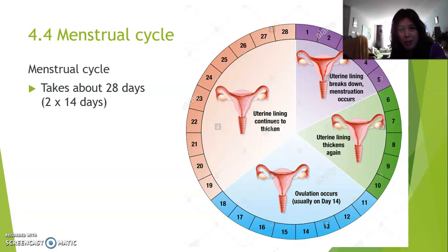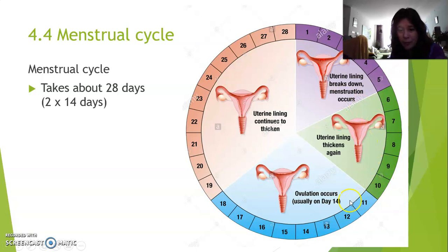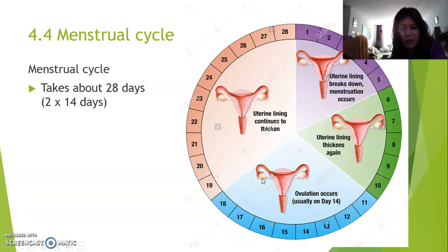When on day 28 there's again no baby, then again this endometrium is broken down, and there's yet another period, another menstruation. On day 14, something special happens right in the middle of the 28 days. That's called ovulation. Ovulation is when an egg cell inside the ovary ripens and develops, and the egg cell then jumps into the oviduct — so from the ovary into the oviduct. That's called ovulation.